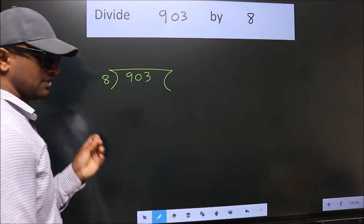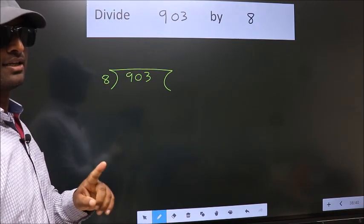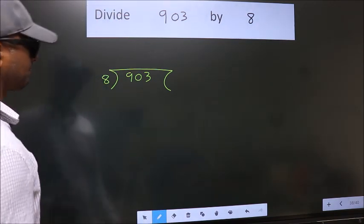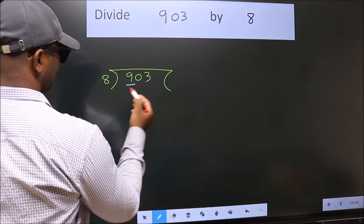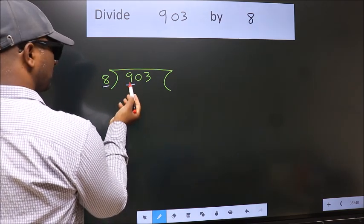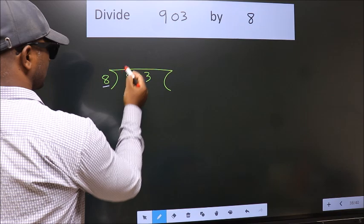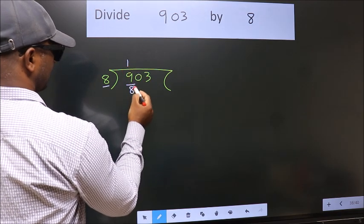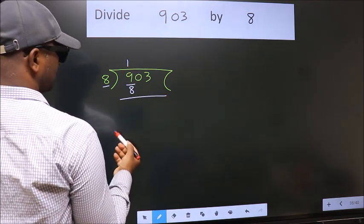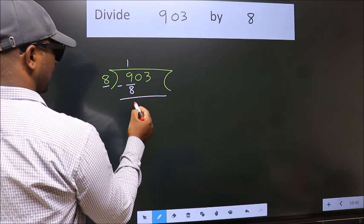This is step 1. Next, here we have 9, here 8. A number close to 9 in the 8 table is 8 times 1 is 8. Now, we subtract and get 1.